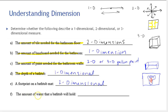Finally: the amount of water that a bathtub will hold. When you pour water in and fill the tub, there are three directions the water can go: right and left along the bottom of the tub, to both sides of the tub as the second dimension, and then the tub fills upward as the third dimension. So this is a three-dimensional measure.